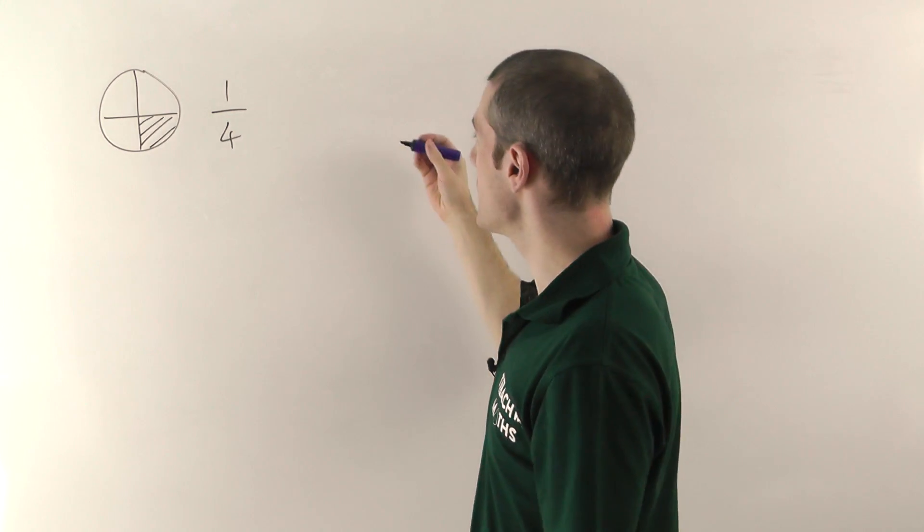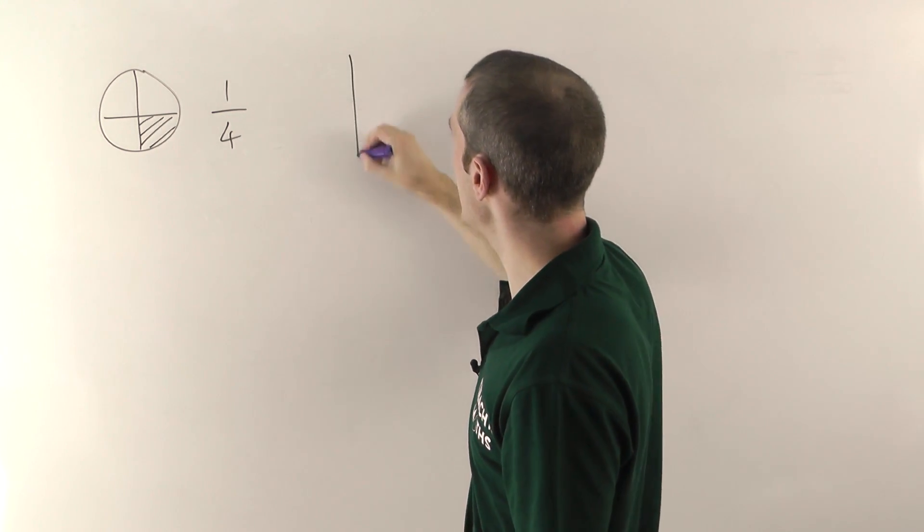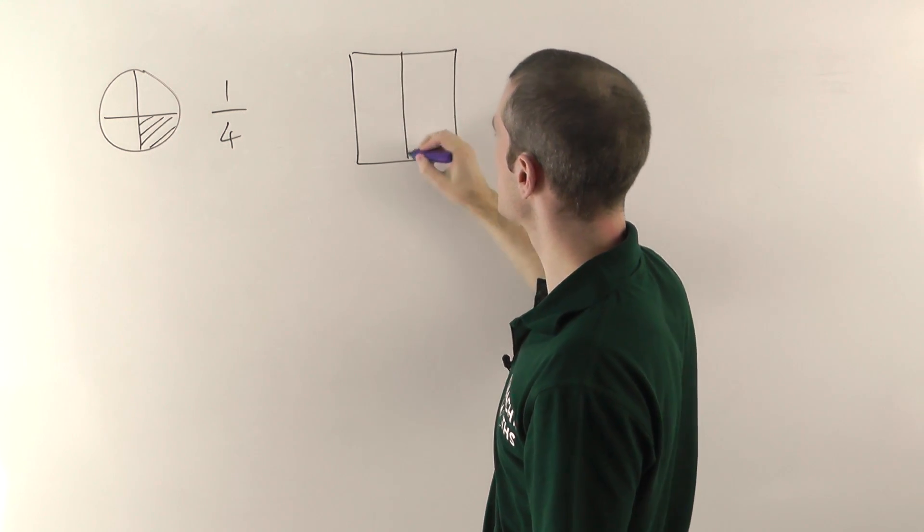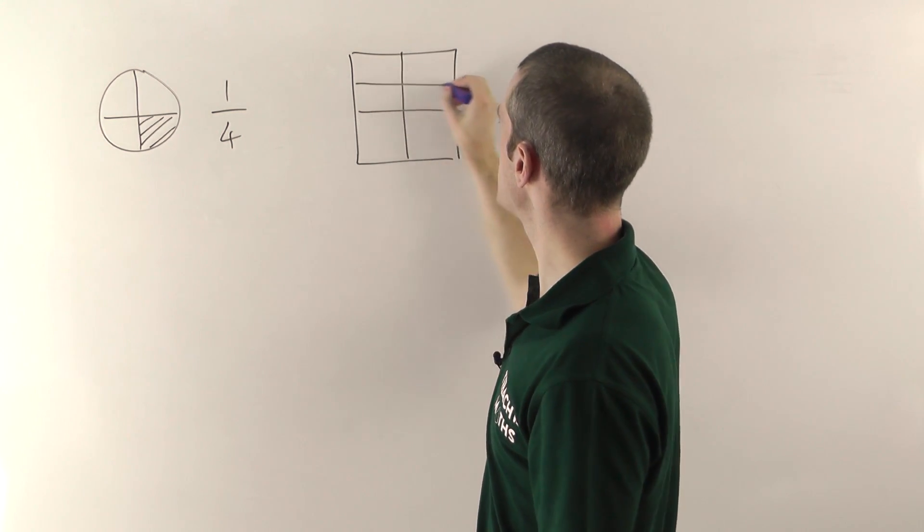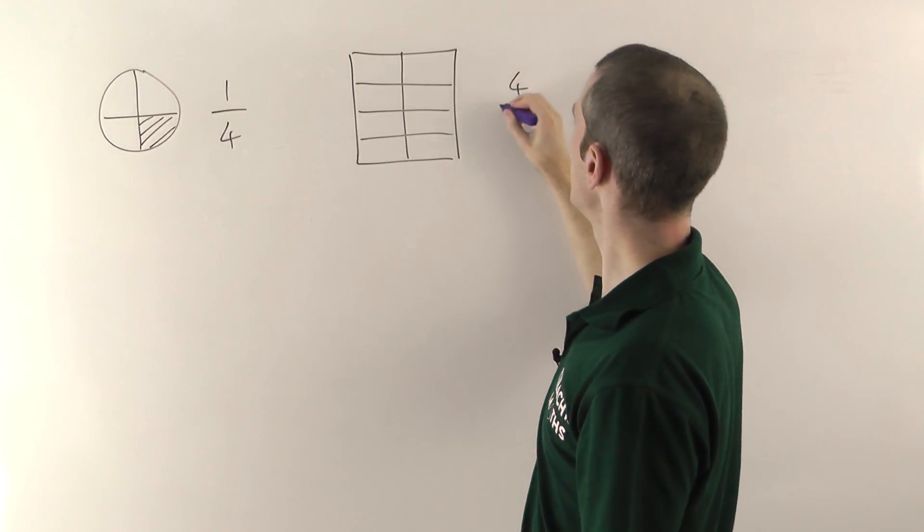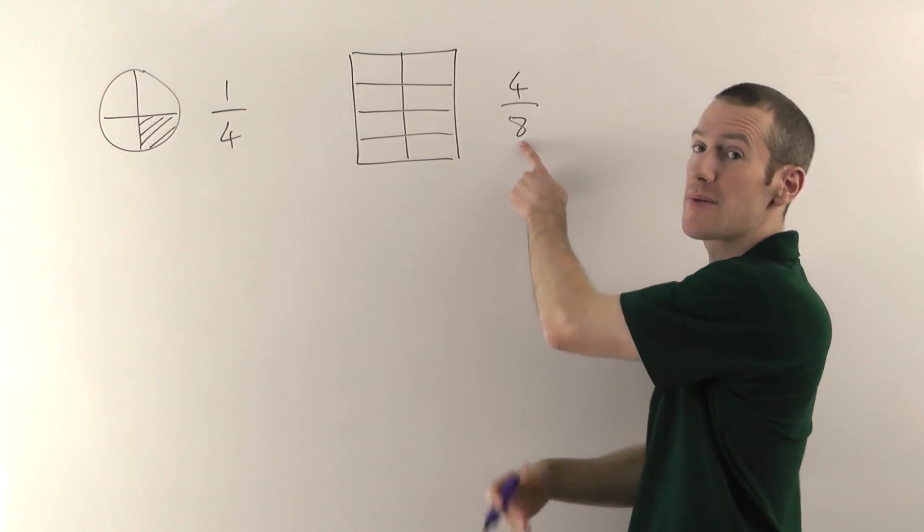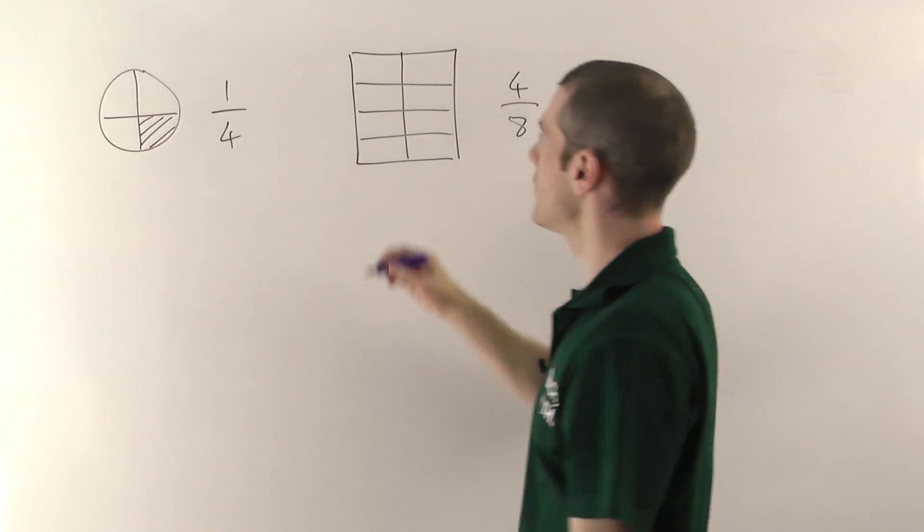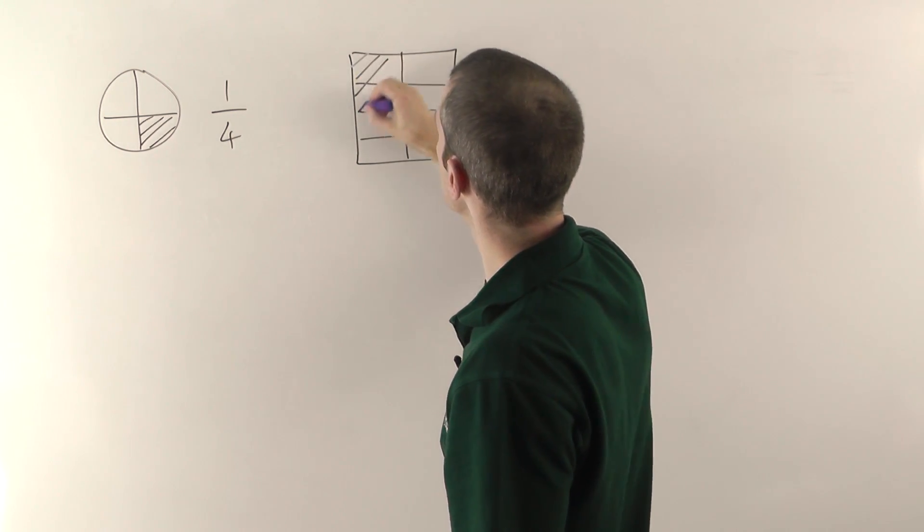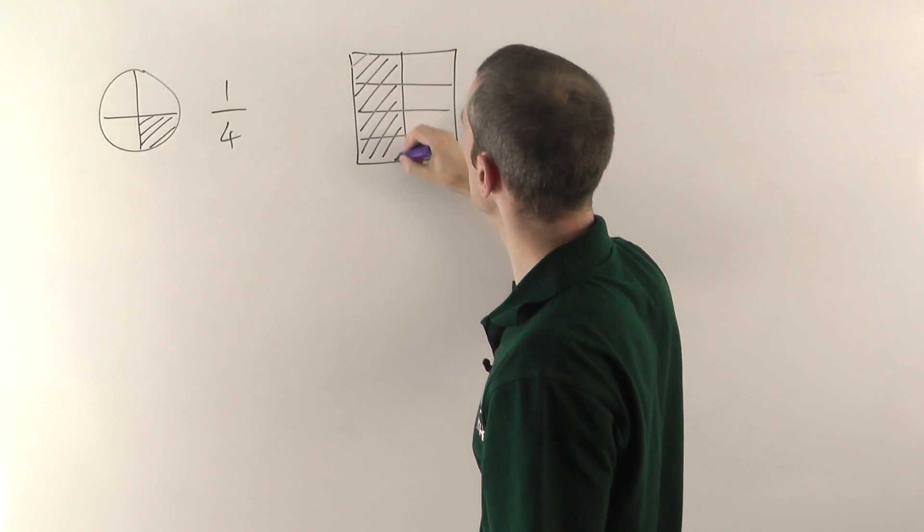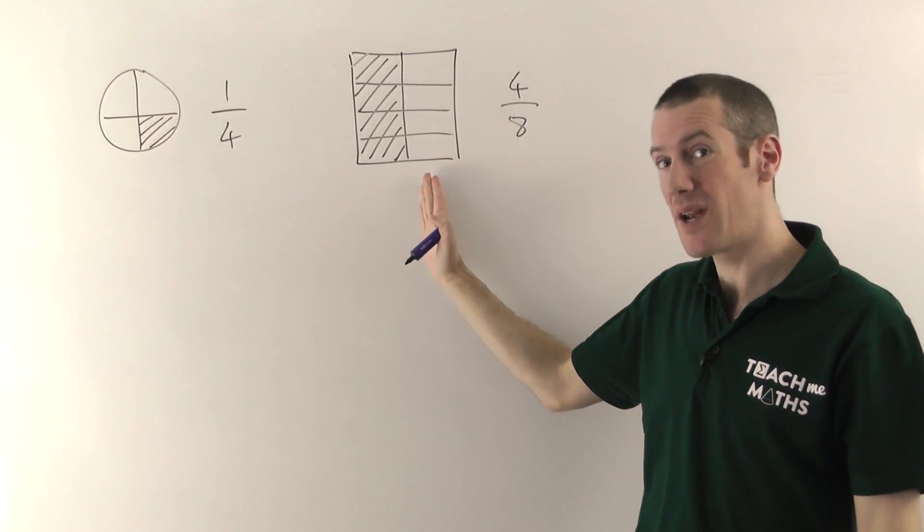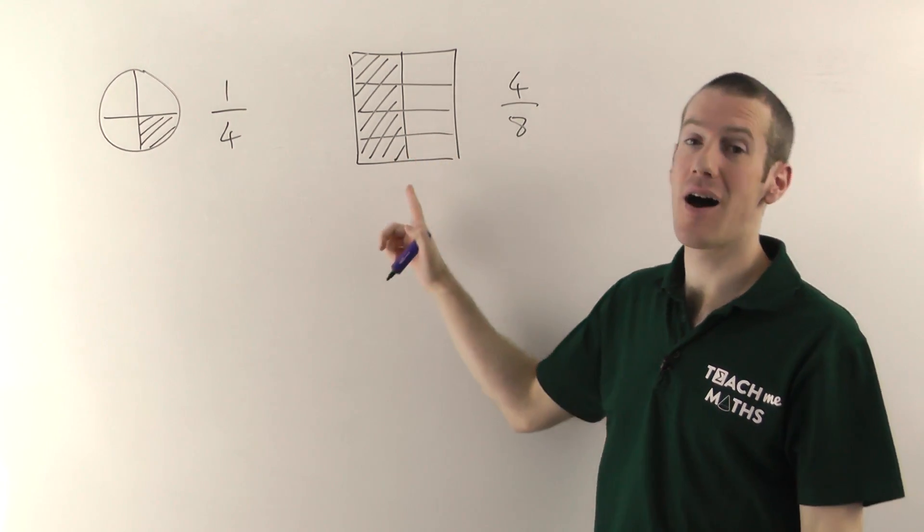You can have different shapes though. If I had to shade in four-eighths of a rectangle like this one, then you could split it into eight pieces. If we've got four-eighths, remember the number on the bottom is how many bits you've got all together, and the number on the top four is how many bits you've actually got. So if I were to shade in four-eighths, I could do it like that. So this is a quarter, this is four-eighths, and many of you will spot that this is the same as a half.